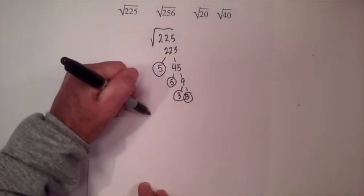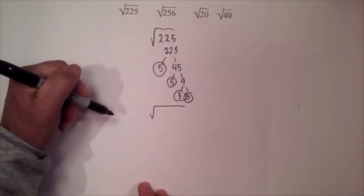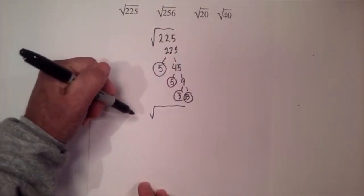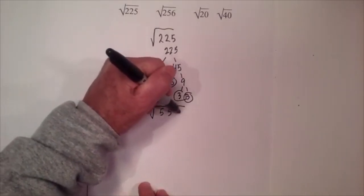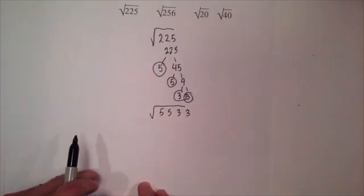So now I'm going to rewrite the square root of 225, and I'm going to place under the radical sign 5, 5, 3, and 3, because those are the prime numbers in the prime factorization of 225.